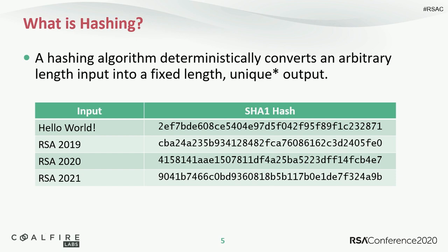What we have here is an example of different inputs and what the resultant outputs would be. So if somebody were to be using these inputs as passwords, you'd see what the SHA-1 hash would be there on the right. Take a look at RSA 2020 versus RSA 2021 — a single-bit difference in the input going into this hash function produces an entirely different outcome. It's a really useful feature.